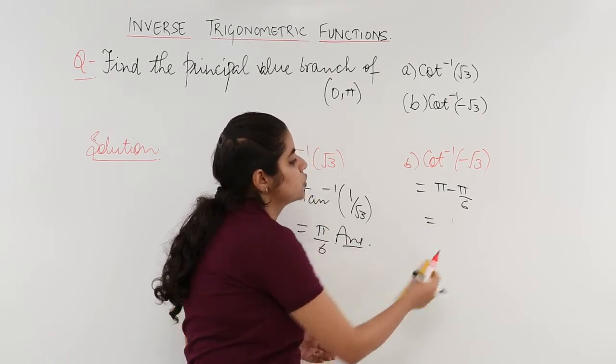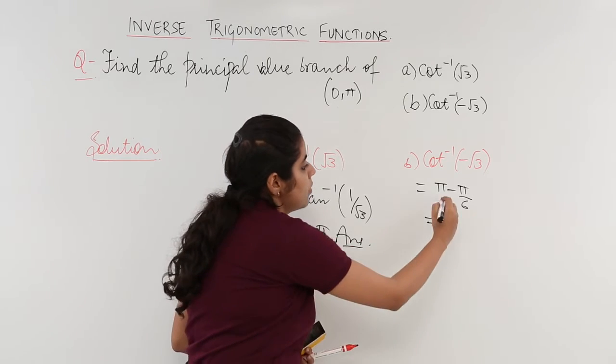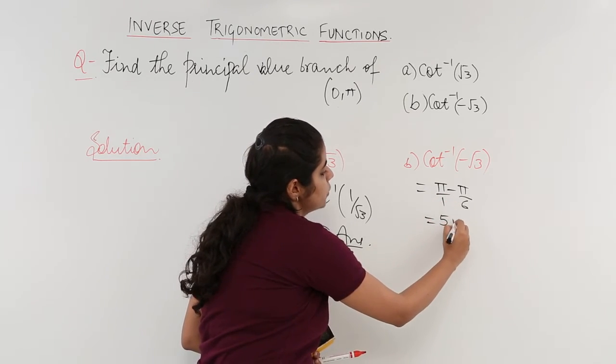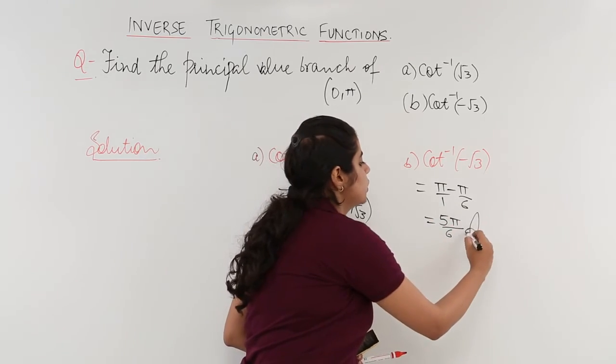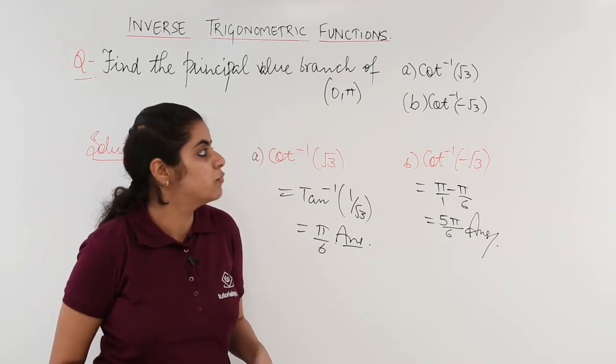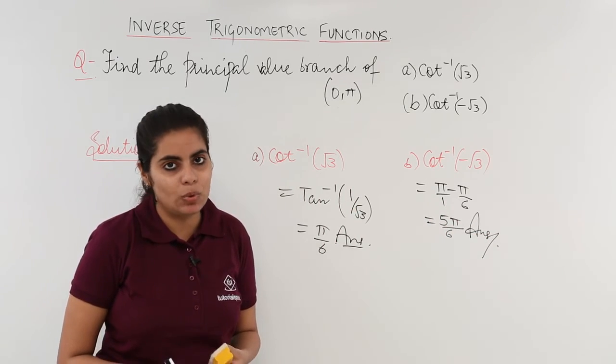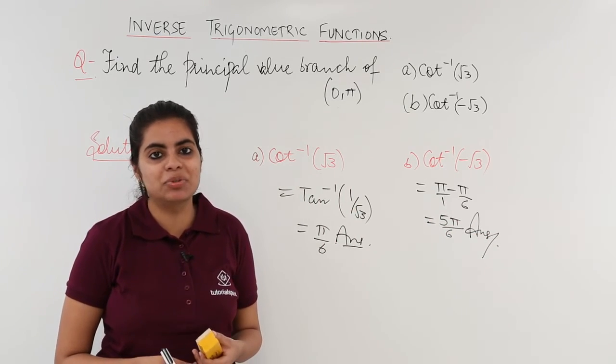So my answer is nothing but π minus π by 6 which is 5π by 6. And this is the answer to the question of cot inverse x wherein the value was given as minus under root 3.